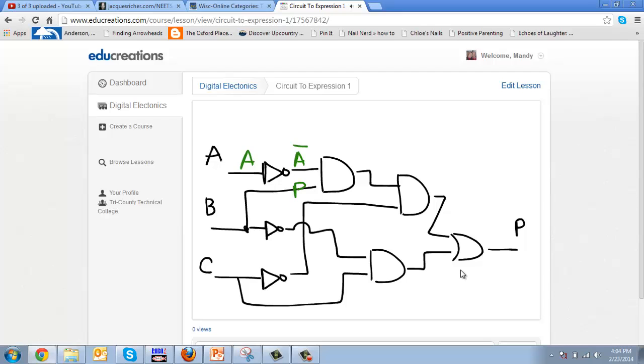And coming in here we have B, so here we have not A and B. And coming in on the bottom we have not C, so this term becomes not A and B and not C.